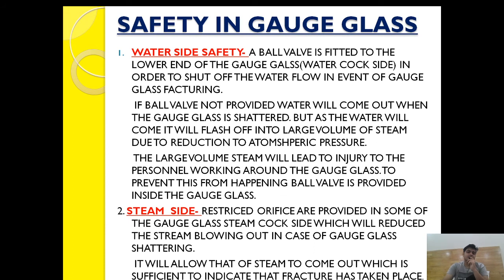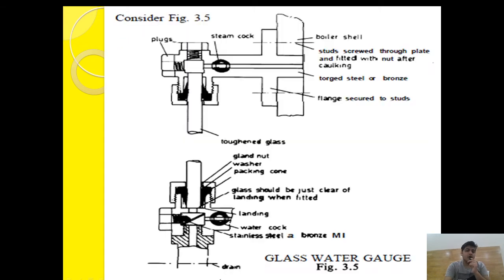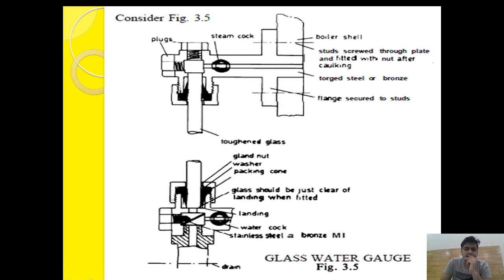Now let's see the steam side safety. A restricted orifice is provided on some gauge glass steam cock sides, which will reduce steam blowing out in case of gauge glass shattering. It allows only enough steam to come out that is sufficient to indicate a fracture has taken place, but restricts the forceful gushing of steam that could affect personnel working around the gauge glass.